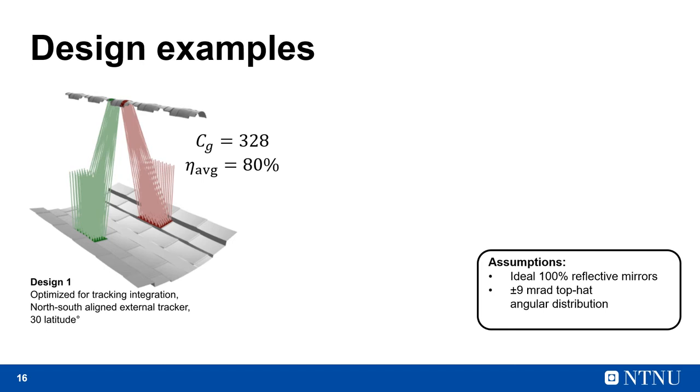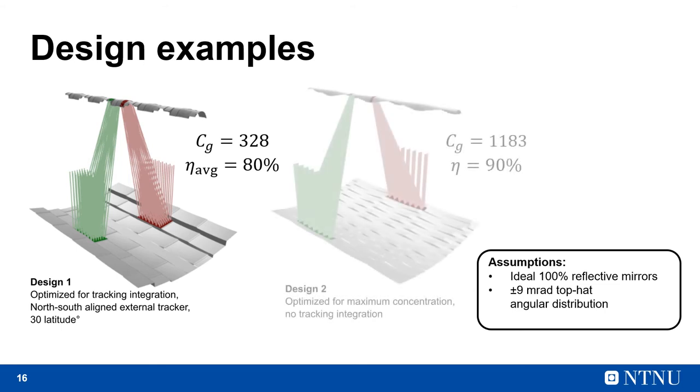And this of course begs the question, is it possible to go even higher? To find out, we tried to drop the tracking integration, and to create a concentrator with only étendue squeezing. This optimized concentrator achieved a geometric concentration of 1183 at 90% efficiency. But unfortunately this version is going to need two-axis external tracking.